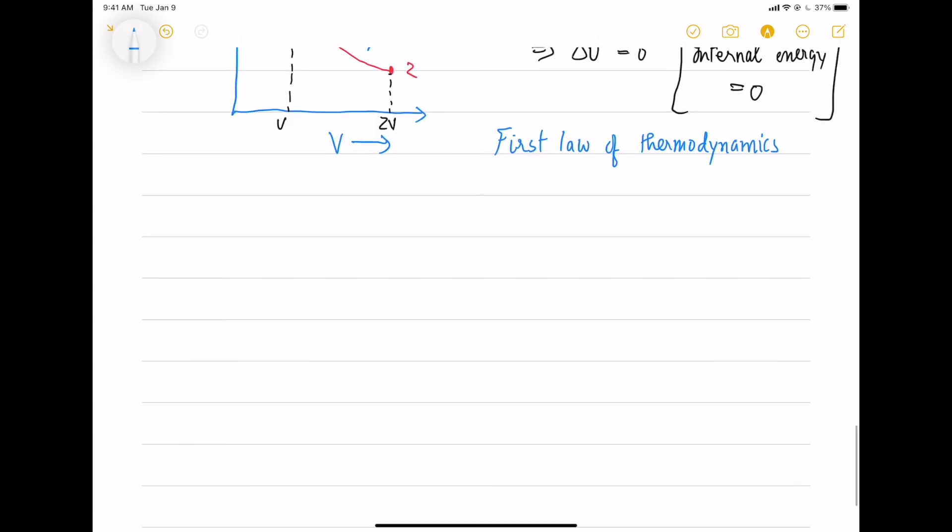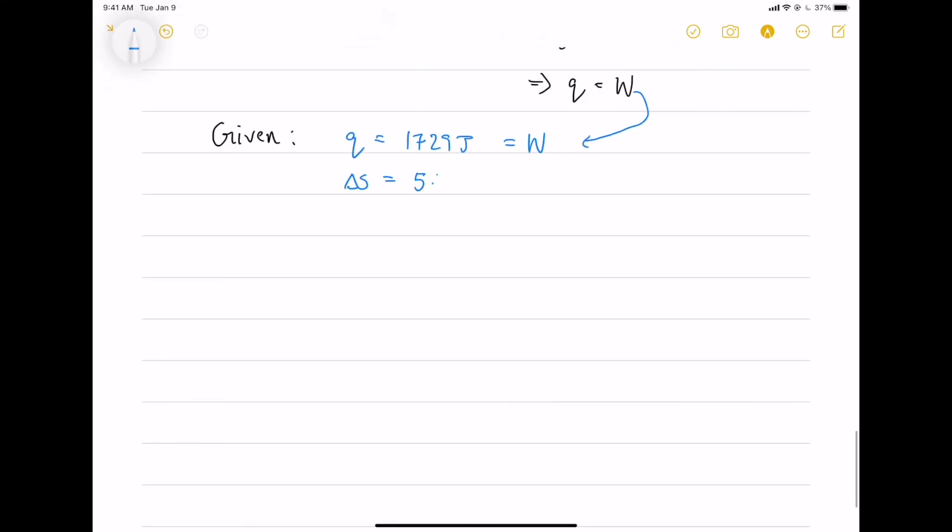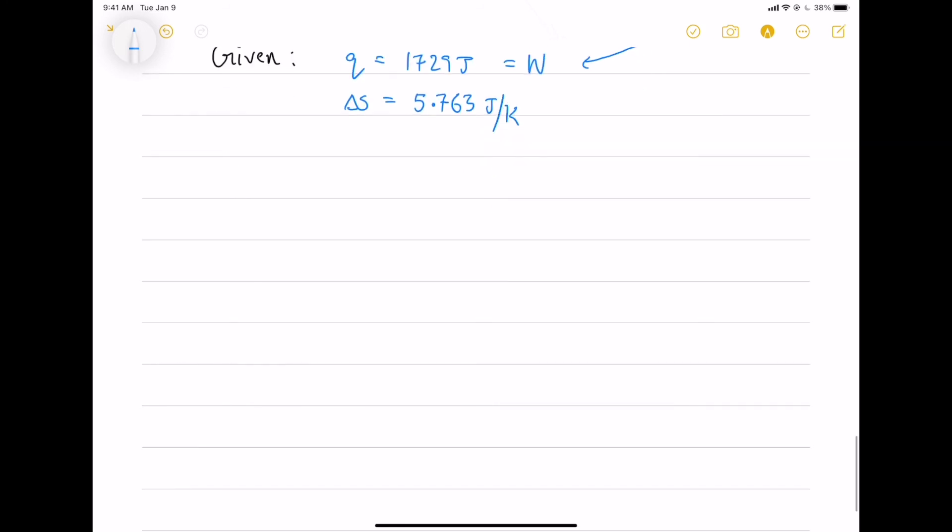From the first law of thermodynamics, we have change in internal energy equals to Q minus W. From this we have Q equals to W. In the question we are given the work done and the delta S as well. So, we know the Q, we know the delta S. From this we can obtain the temperature is 300 Kelvin.